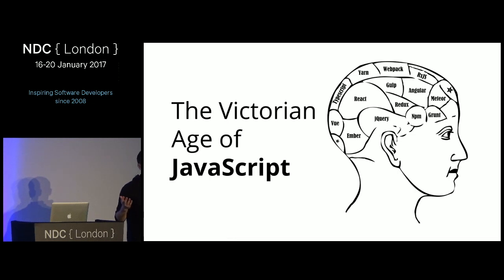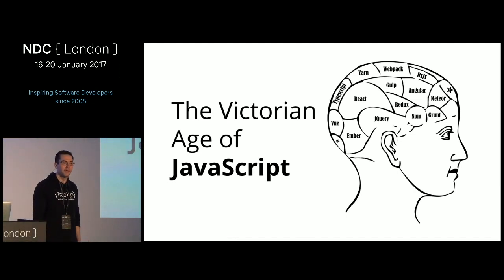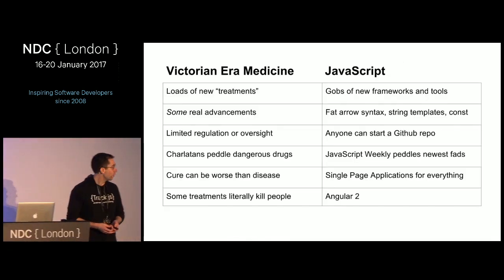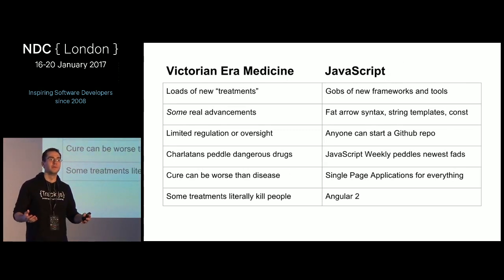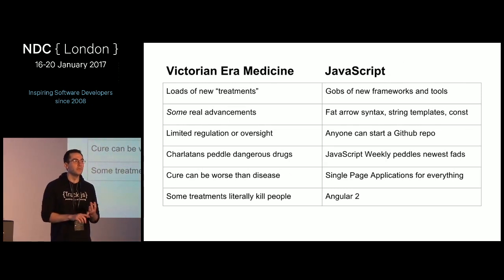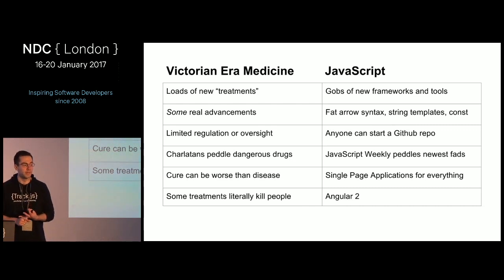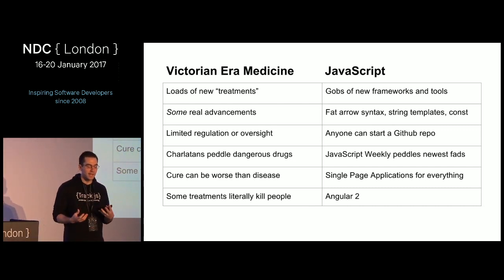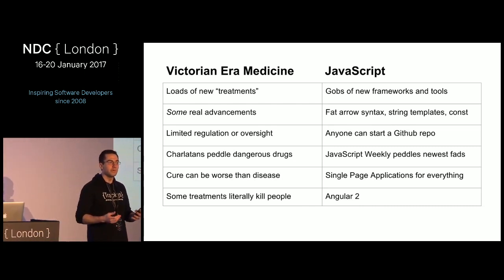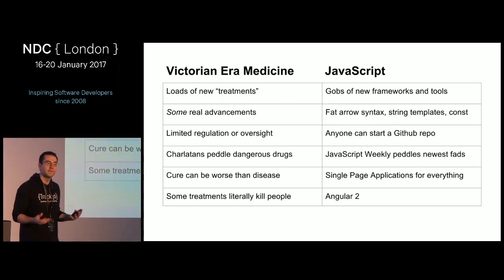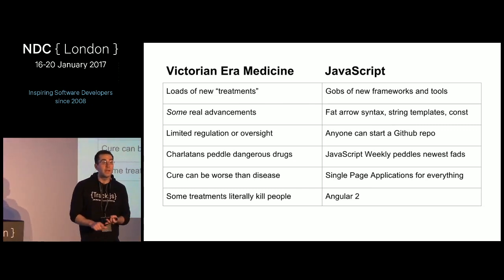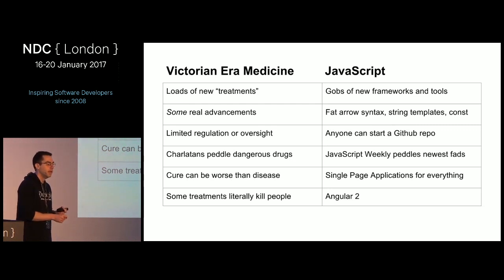Welcome to the Victorian Age of JavaScript. When I think about JavaScript moving very quickly — new frameworks all the time, almost too much to keep up with — there are parallels to medicine 150 years ago in the Victorian era. There were loads of new treatments back then, and JavaScript has a similar situation now with loads of frameworks, build tools, and package managers.